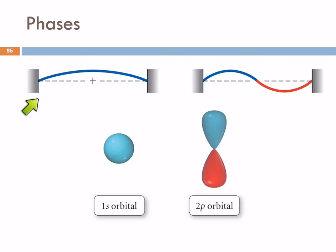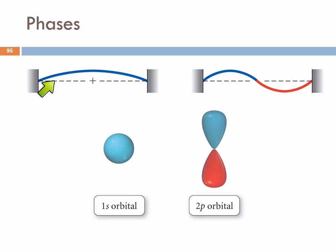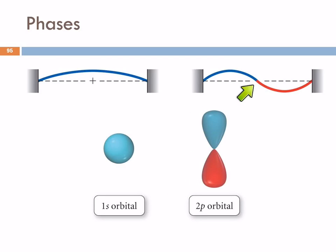So if we look at the s orbital, the 1s orbital doesn't have a node, so it's going to be positive. The 2p orbital has a node. And so on one side the phase is positive, on the other side the phase is negative. So in the illustrations, a lot of times they'll use blue to indicate positive and red to indicate negative.